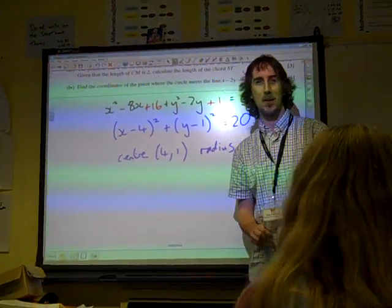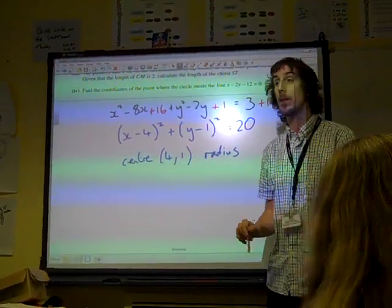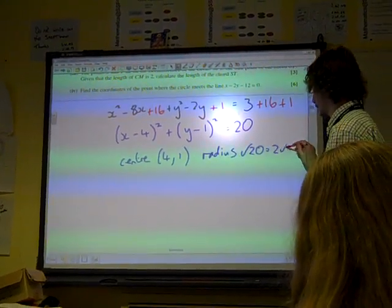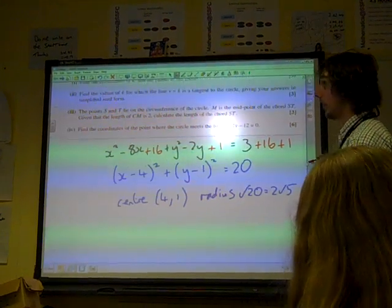So the centre is the point 4, 1 and the radius is 2 root 5. Root 20, so we're going to write that as being 2 root 5. OK, we've done part 1.